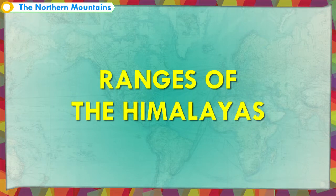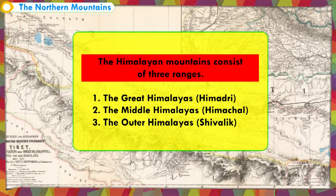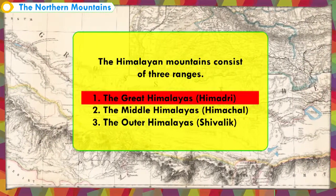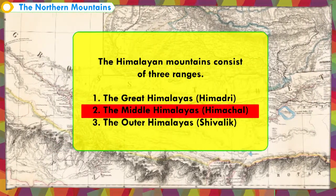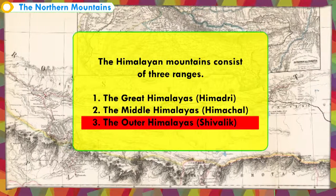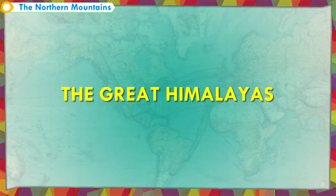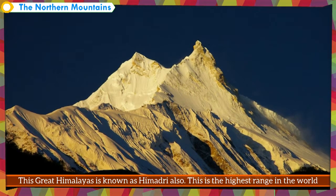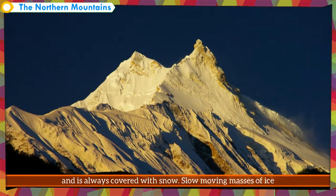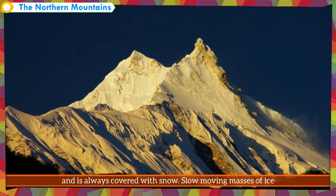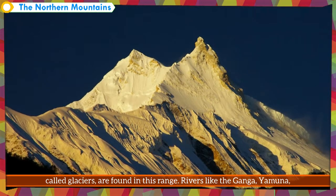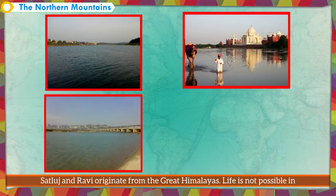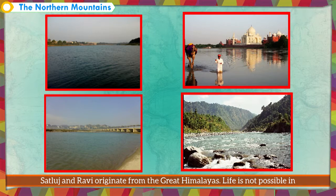The Himalayan mountains consist of three ranges: the Great Himalayas (Himadri), the Middle Himalayas (Himachal), and the Outer Himalayas (Shivalik). The Great Himalayas, also known as Himadri, is the highest range in the world and is always covered with snow. Slow-moving masses of ice called glaciers are found in this range. Rivers like the Ganga, Yamuna, Satlaj and Ravi originate from the Great Himalayas.